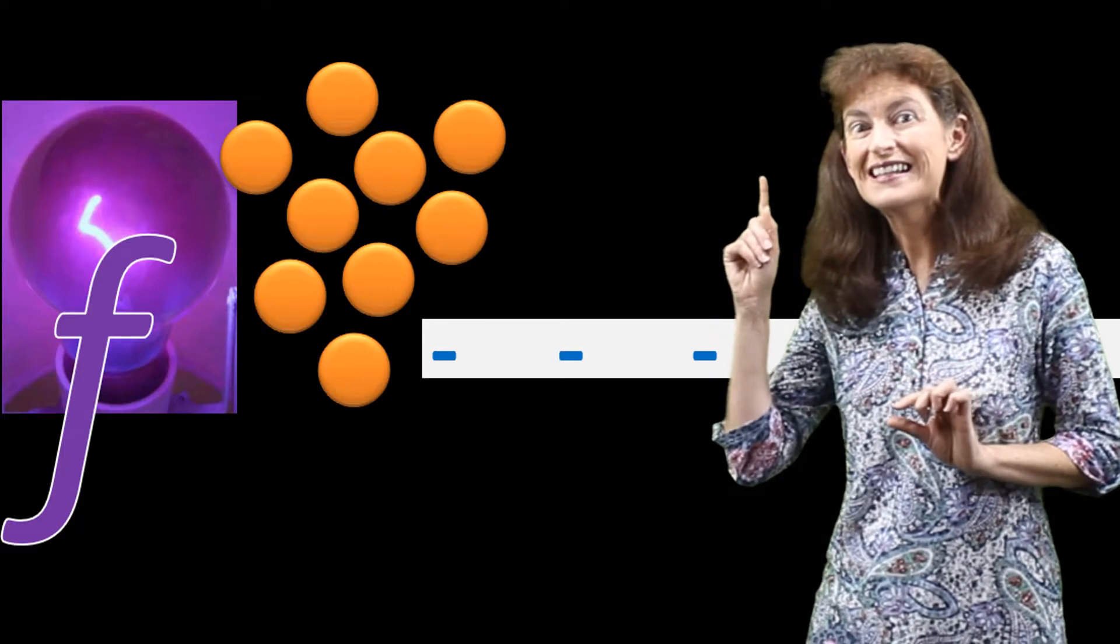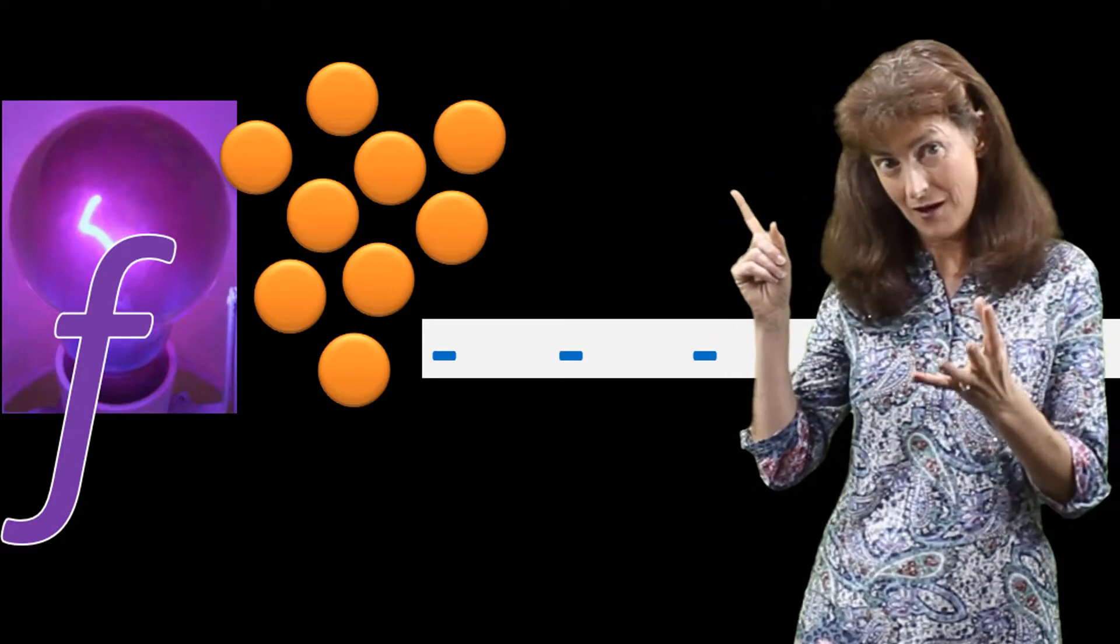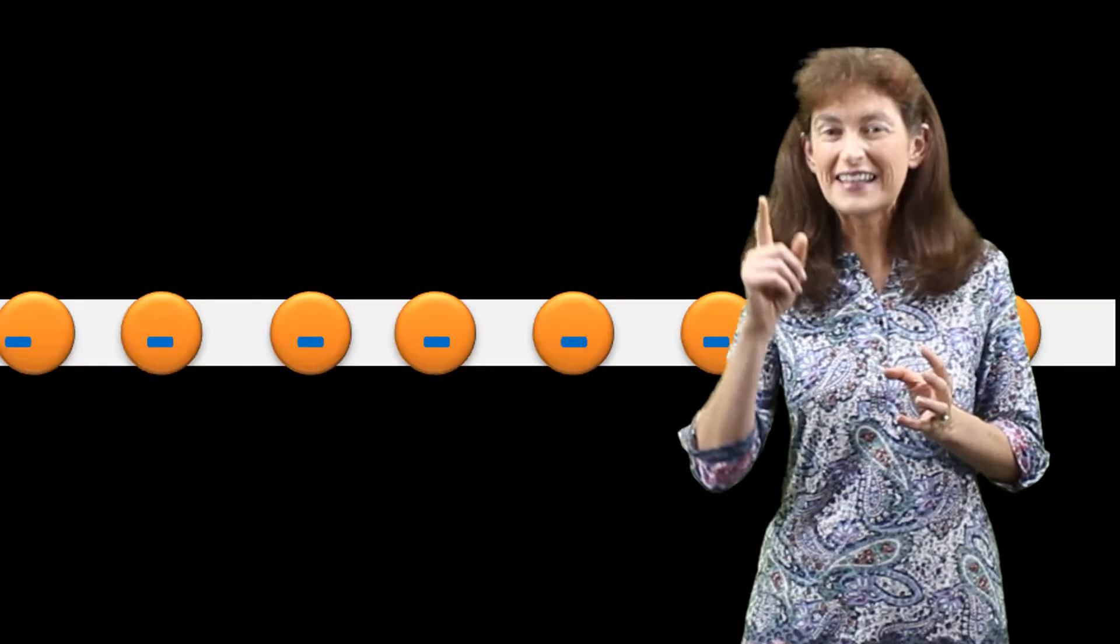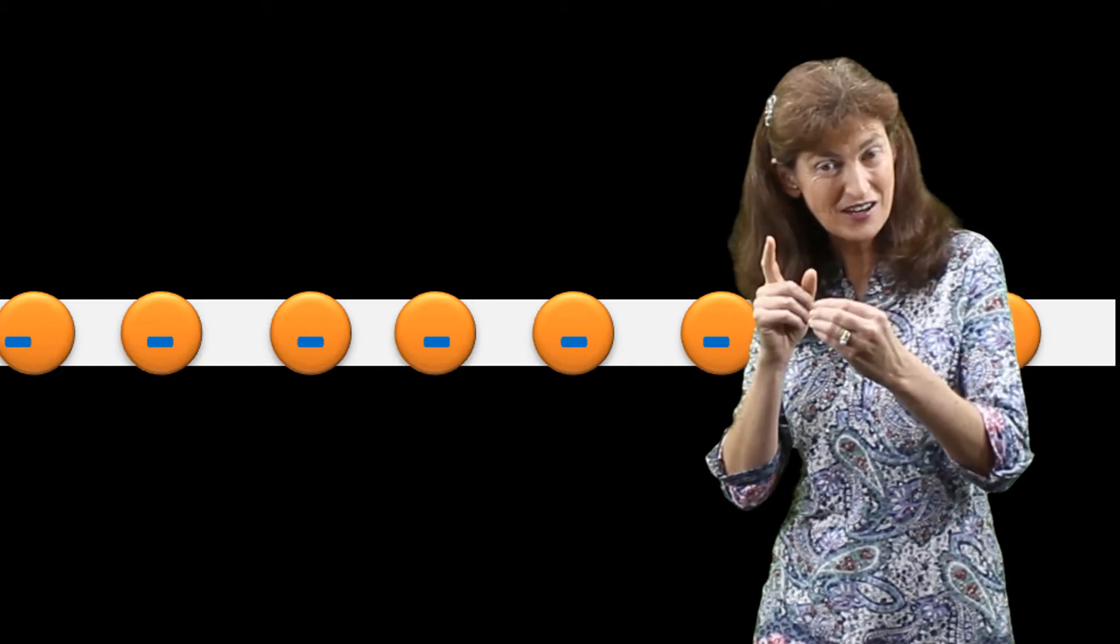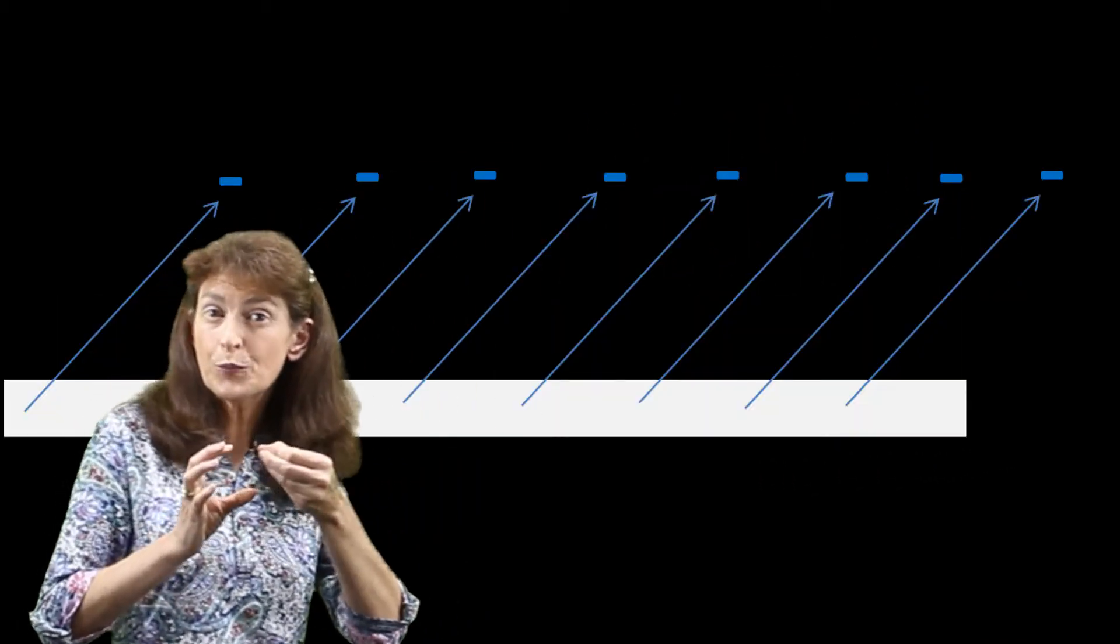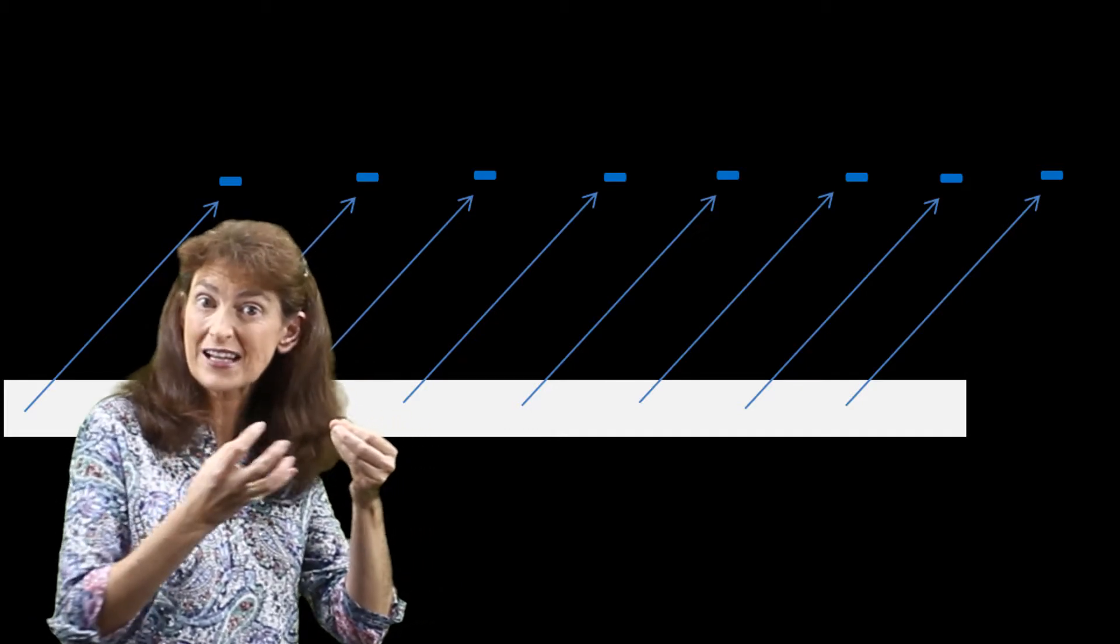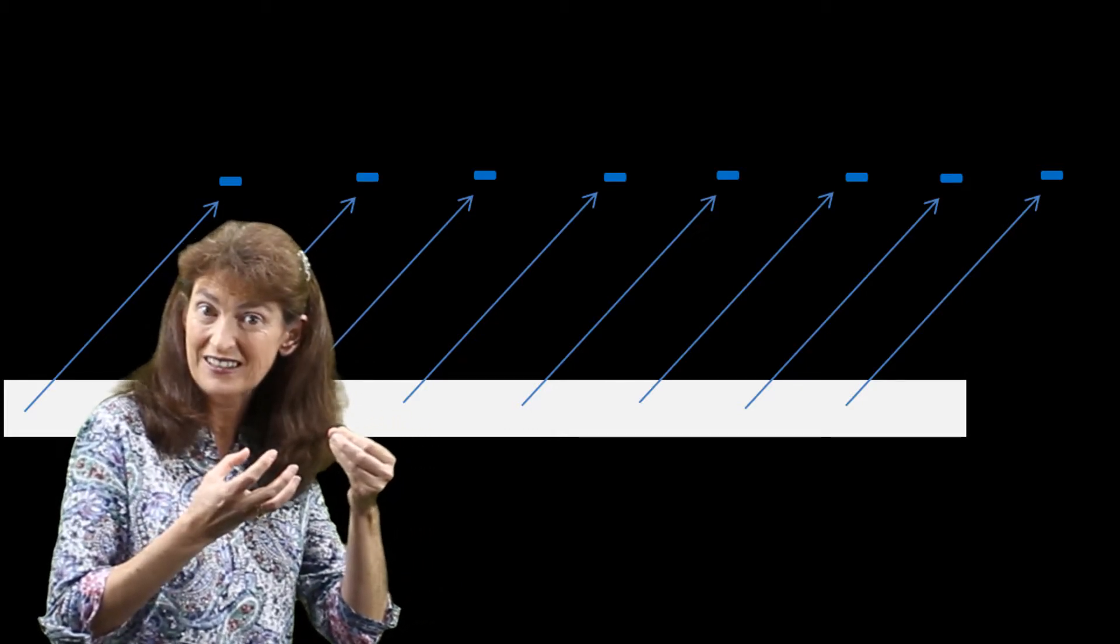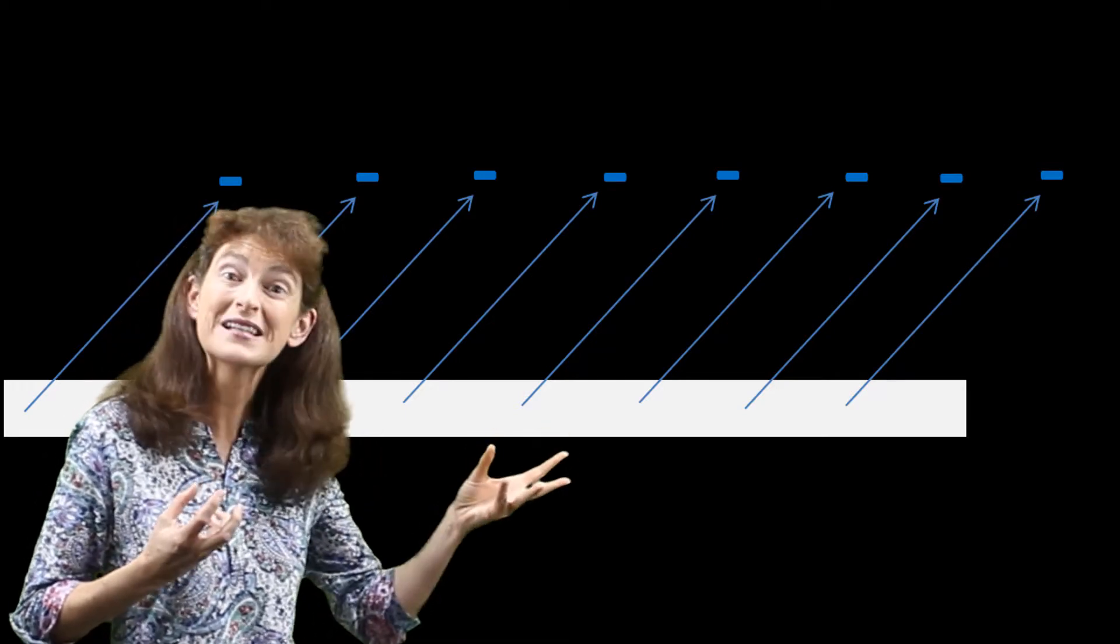They're held inside the metal by this electrostatic attraction between the positive kernels and them. So now, if these photons of light can give these electrons enough energy, then they could break free from that electrostatic attraction exerted by the positive kernels and be emitted. And that's what happens in the photoelectric effect.